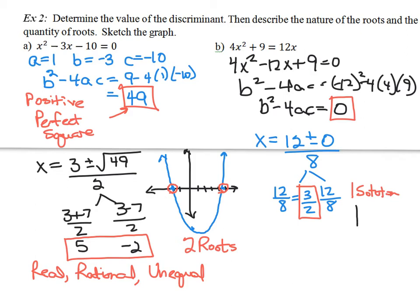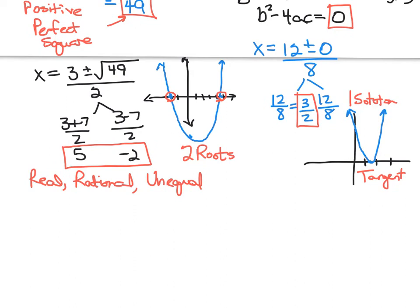On a graph, I would have a point where the graph touches the x-axis at 1.5. This is called tangent to the curve, because I only have one spot where the curve touches the x-axis — the curve is tangent to the x-axis. To describe our roots: they are real, they are rational, and they are equal to each other because there were two roots but they matched.